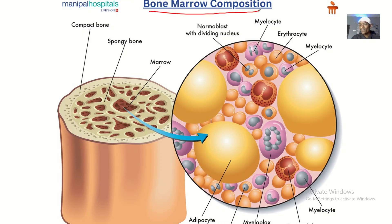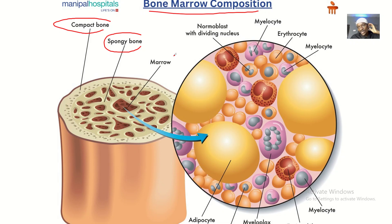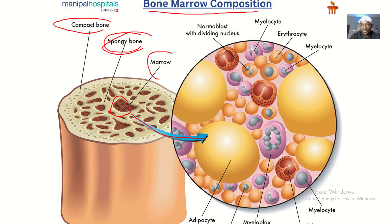Looking at the bone marrow composition — in a bone, we have the compact bone on the outside, spongy bone which is intermediate, and the bone marrow is actually what is inside. So now, taking the bone marrow: when we talk about the composition of the bone marrow...